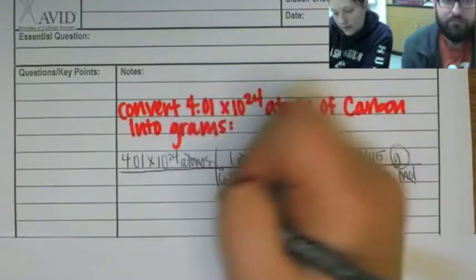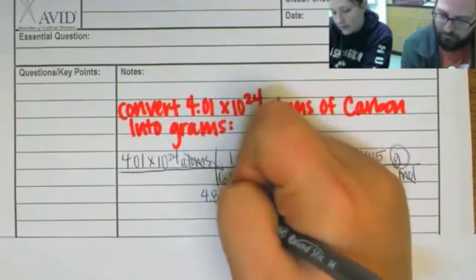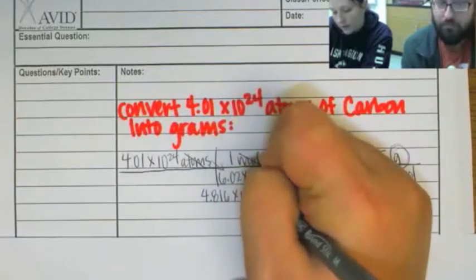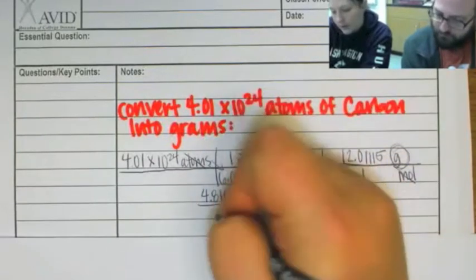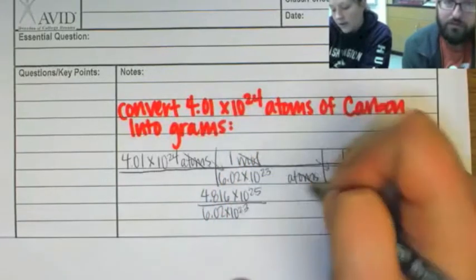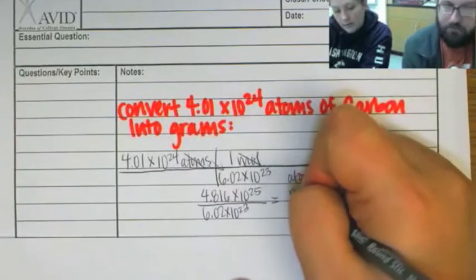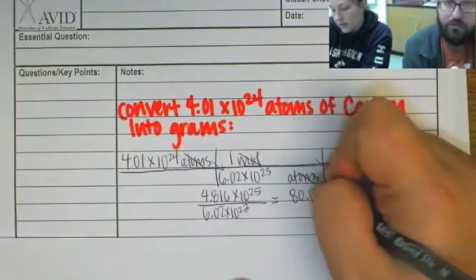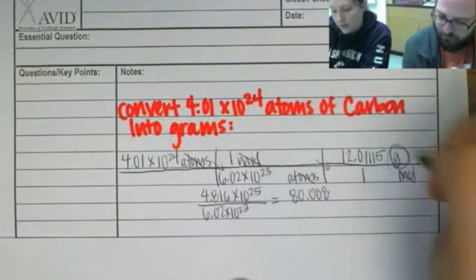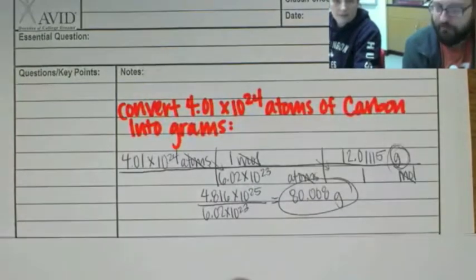So when I multiply across the top, I get 4.816 times 10 to the 25th. Mm-hmm. When I multiply across the bottom, I get 6.02 times 10 to the 23rd. Right. And then I divide and I get 80.008. And my unit was up here, so it's going to be grams. And that is my final answer. That's right. That's how you do it? Yes.